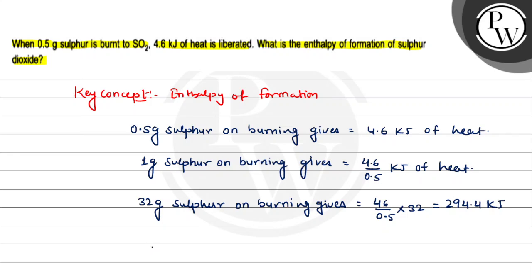The enthalpy of formation of sulfur dioxide will be how much? 294.4 kJ. Let me write this down. The enthalpy of formation of sulfur dioxide is 294.4 kJ.